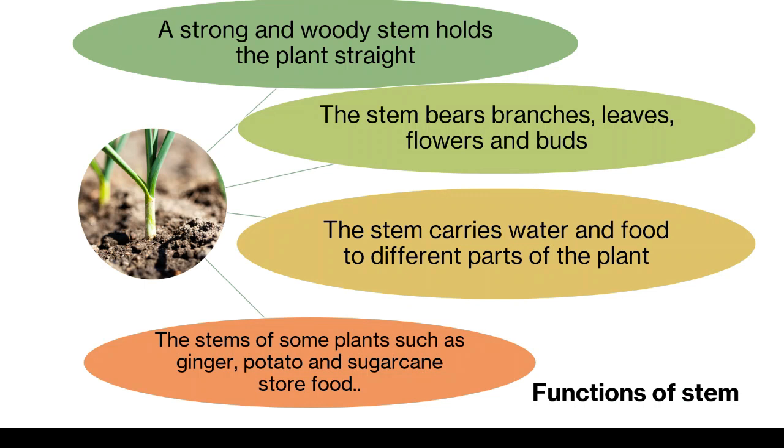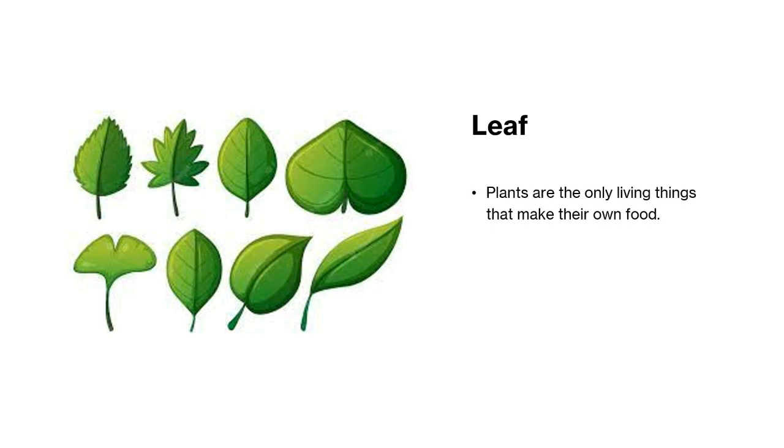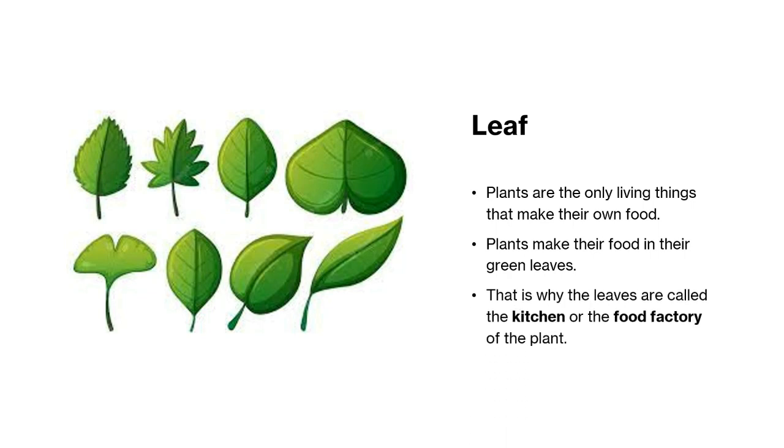From the stem, we now move to the leaf. Plants are the only living things that make their own food. Plants make their food in their green leaves. That is why they are called the kitchen or the food factory of the plant.